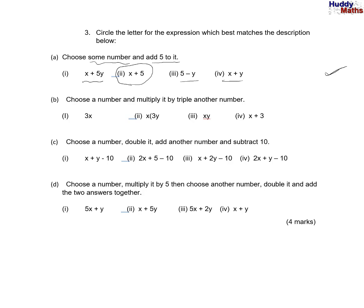Choose a number and multiply it by triple another number. So this is just three times an unknown number. This is two unknown numbers multiplied. This is another unknown number plus three. So it's this one here. It should have a bracket there. It's an unknown number times three times another unknown number. So it's part two again. Bit tricky.